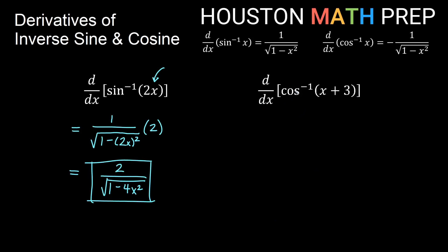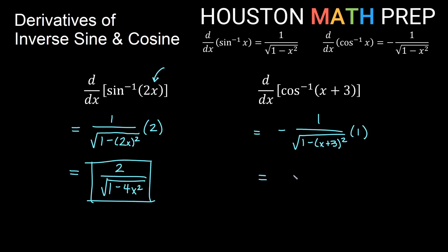For the derivative of inverse cosine of (x + 3), we use the negative formula: negative 1 over the square root of 1 minus (x + 3) squared. By the chain rule, we multiply by the derivative of x + 3, which is 1, so nothing changes. The final answer is negative 1 over the square root of 1 minus (x + 3) all squared.